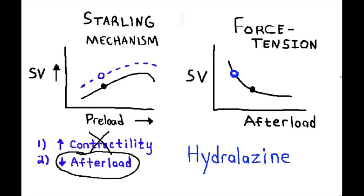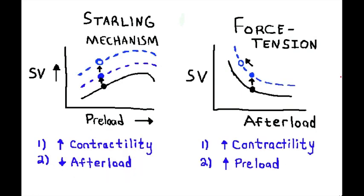Let's go on to a more difficult example. Can you name the drug that was given to this patient? This example is a bit more challenging, but very doable if we follow the same simple, intuitive system we used before. Let's turn our attention to just one of the two graphs.